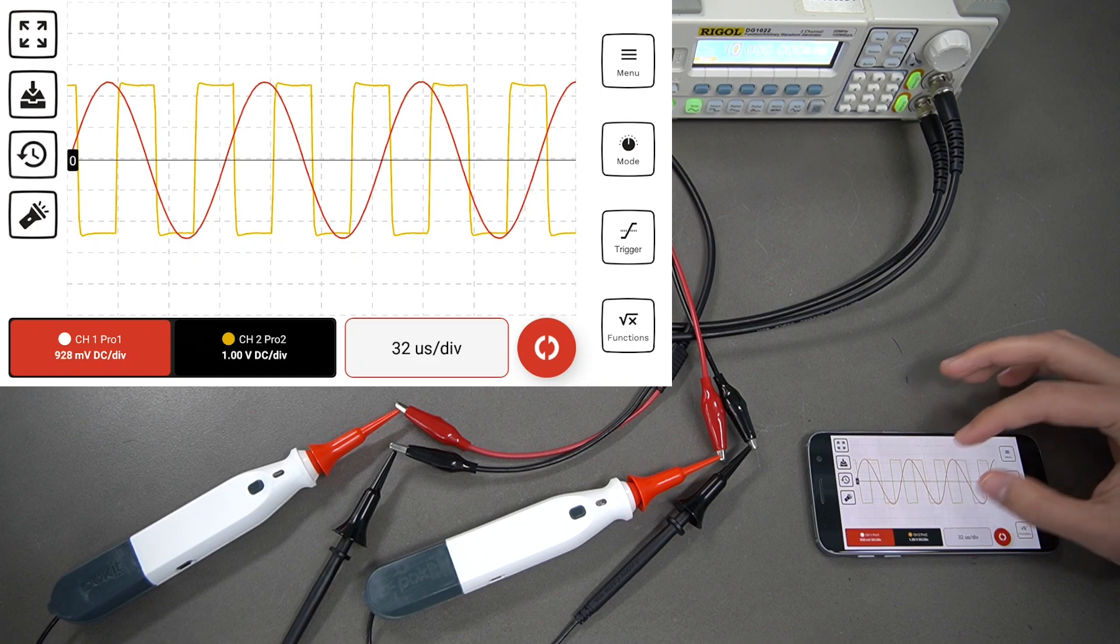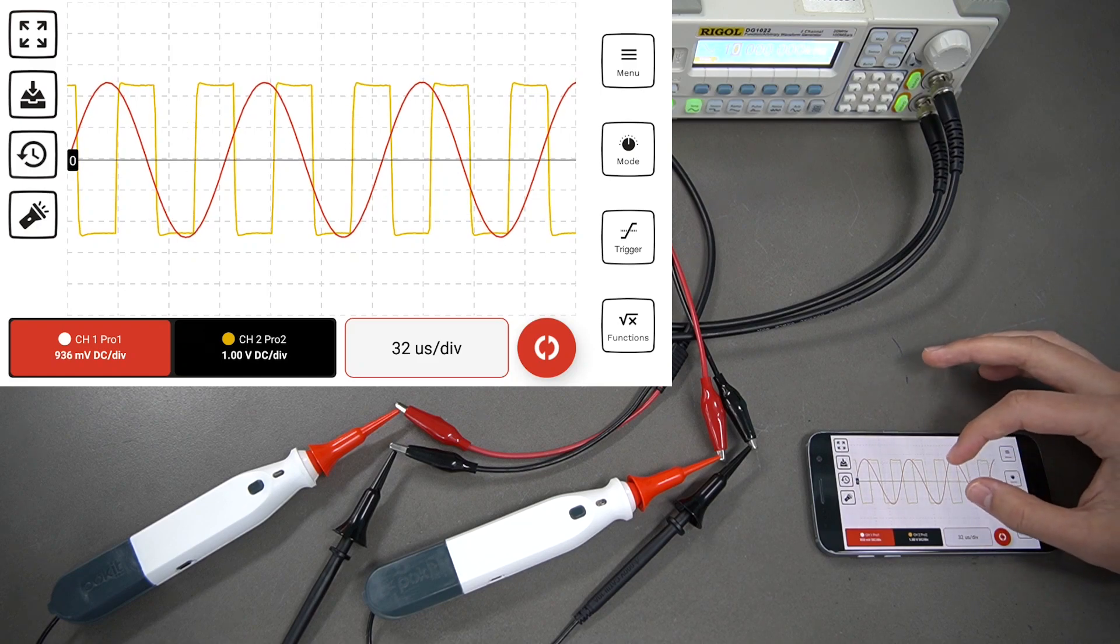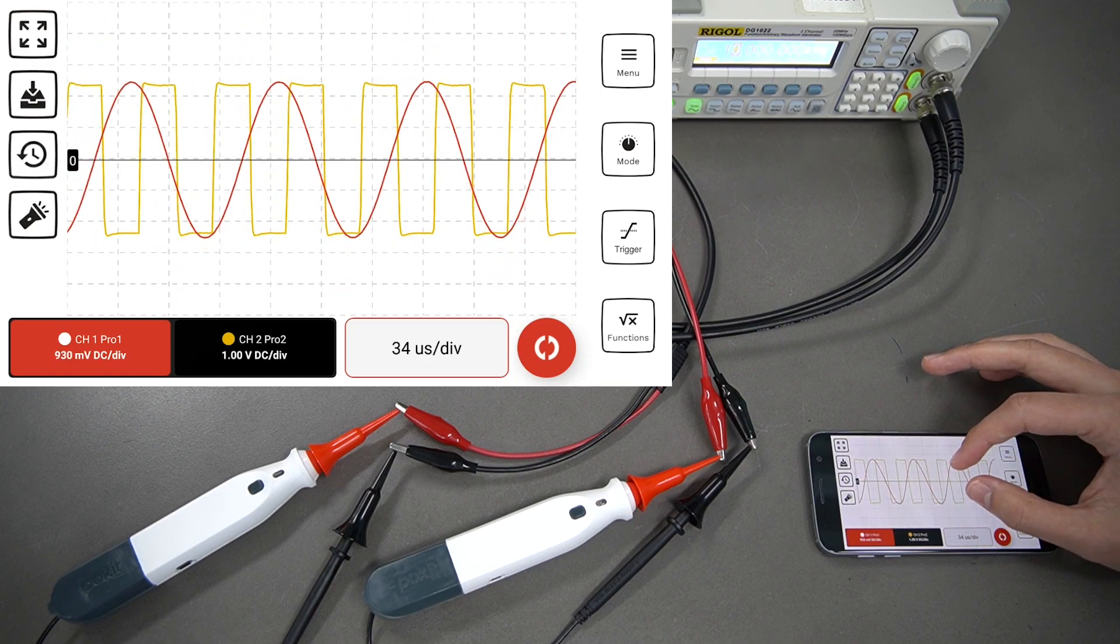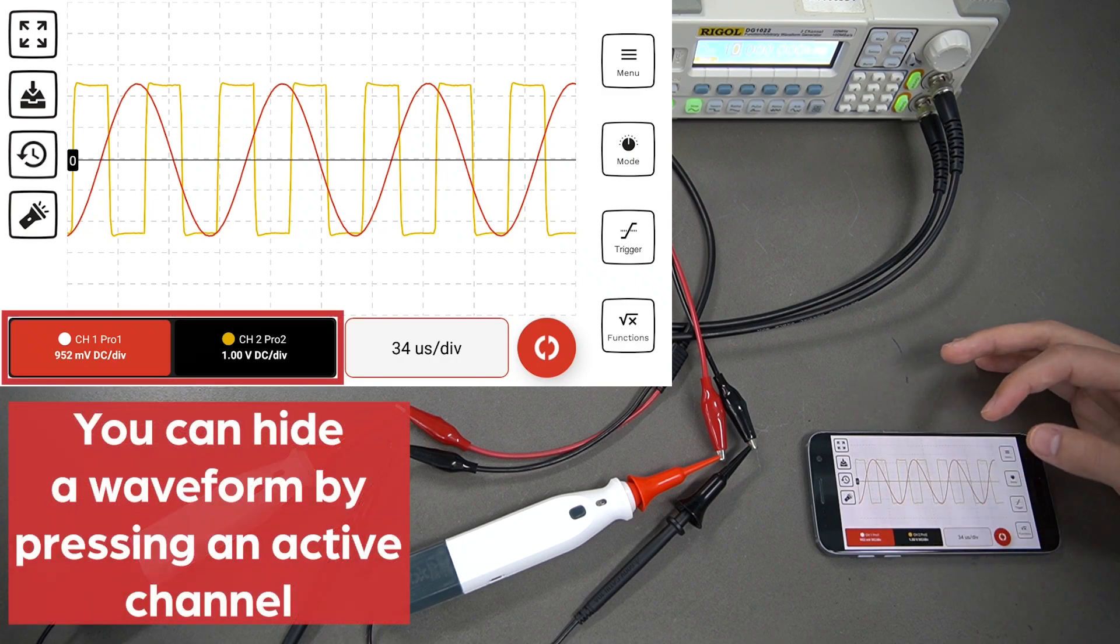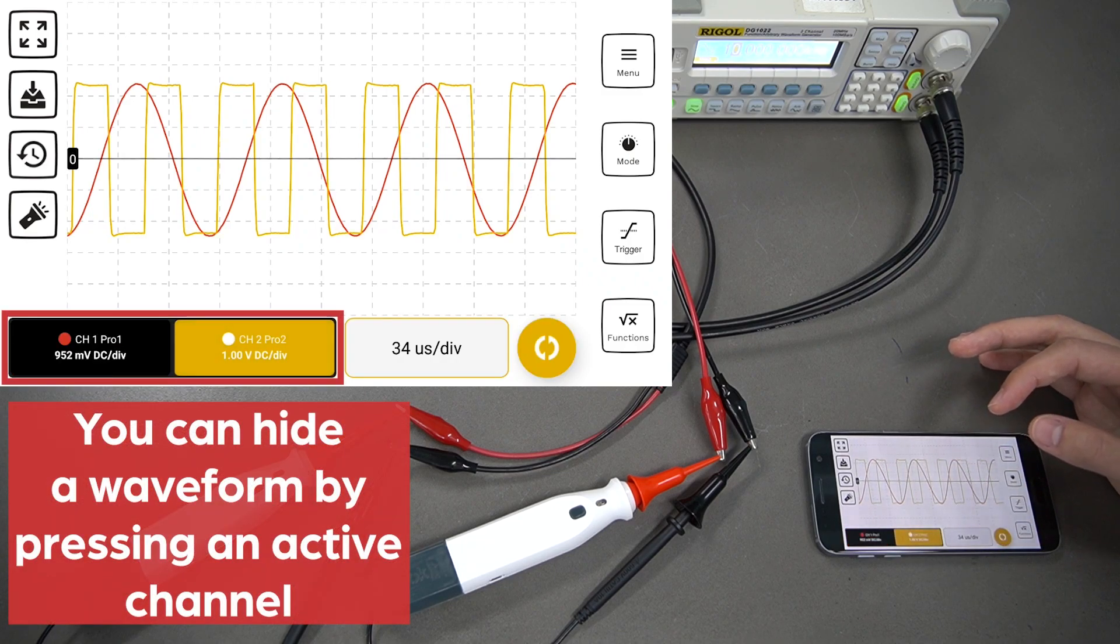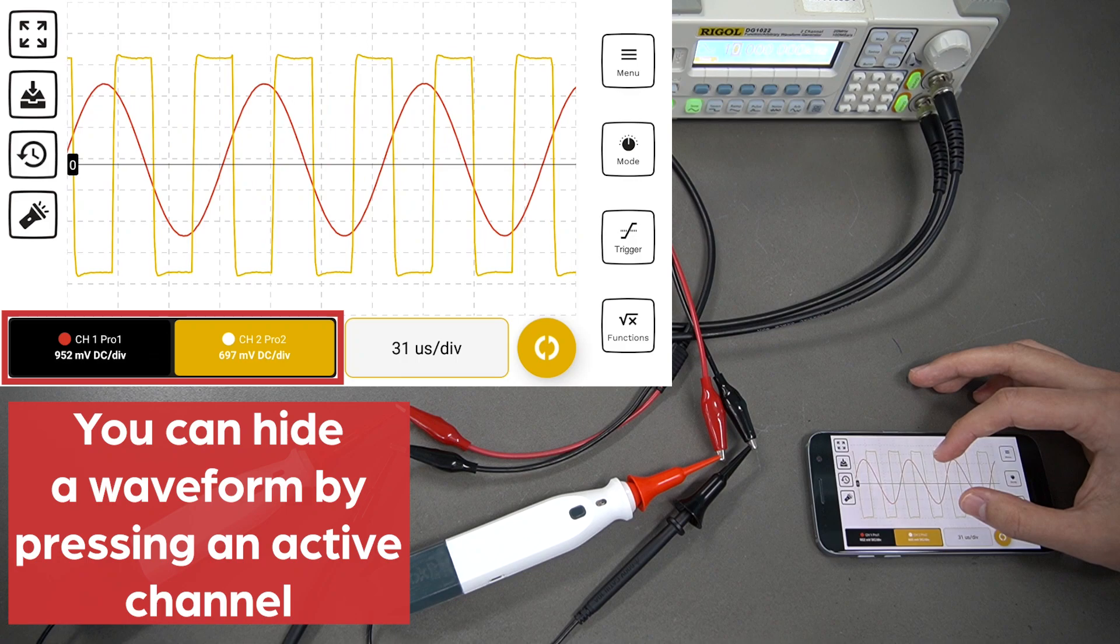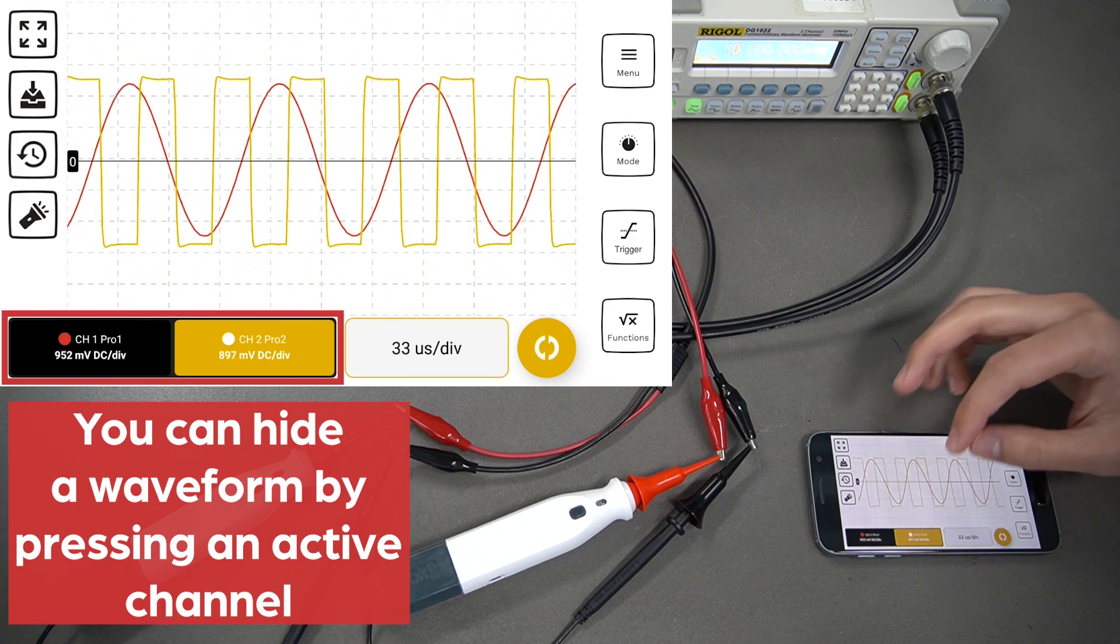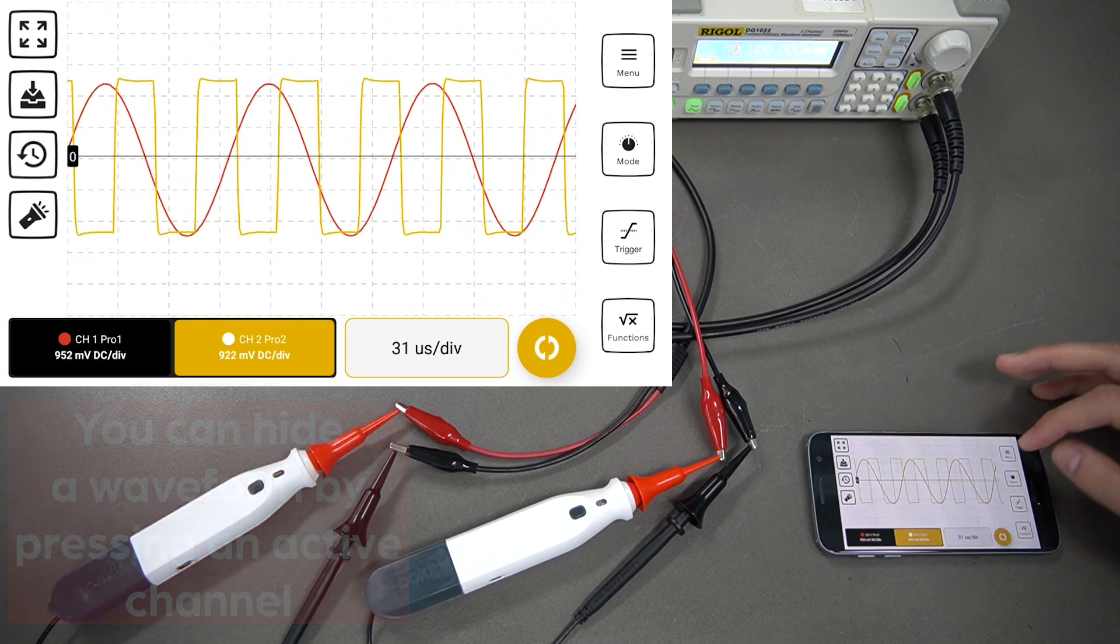This is just for channel 1, so you can see only the red waveform there is changing. But if we go into the yellow one, or channel 2, you can see I can change that now as well. Let's keep those about the same height.